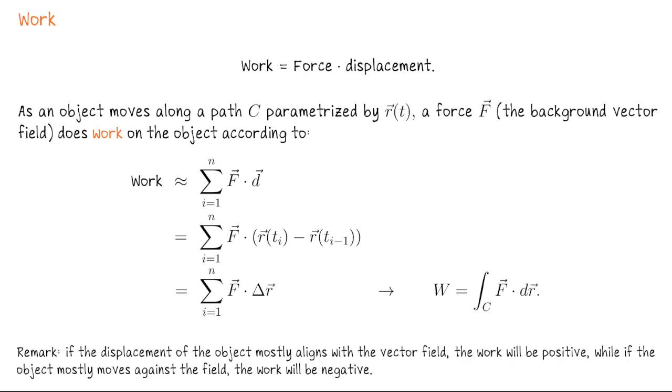So these are the position vectors for two points on the curve and then we take their difference vector and that takes us from one point to the next. So that's like a little vector that represents displacement along the curve.